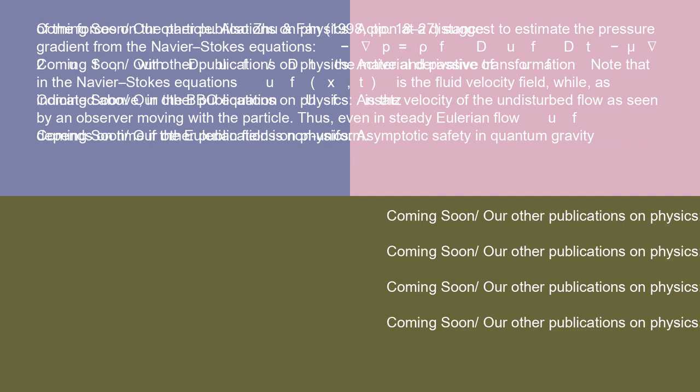Also, Zhu and Fan, 1998, pages 18 to 27, suggest to estimate the pressure gradient from the Navier-Stokes equations: minus nabla p equals rho_f duf/dt minus mu nabla^2 uf.